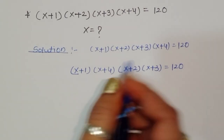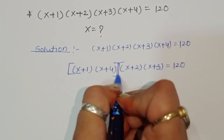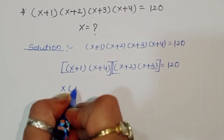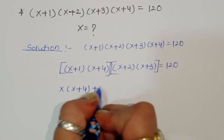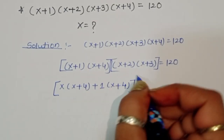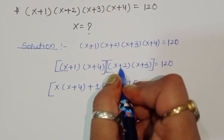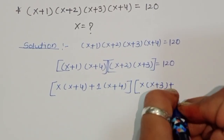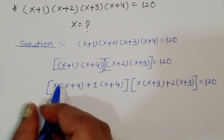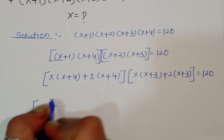Now we multiply the first pair: (x+1)(x+4) gives x·x + 4x + 1·x + 4. The second pair: (x+2)(x+3) gives x·x + 3x + 2x + 6. This equals 120.